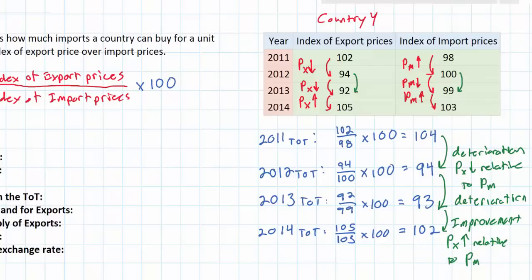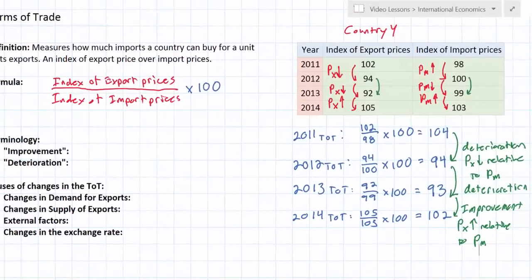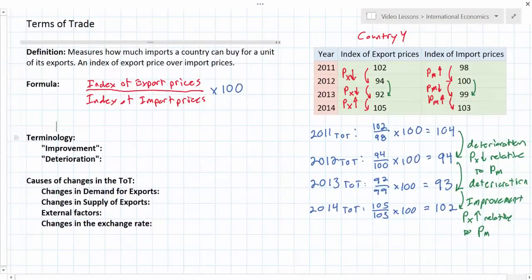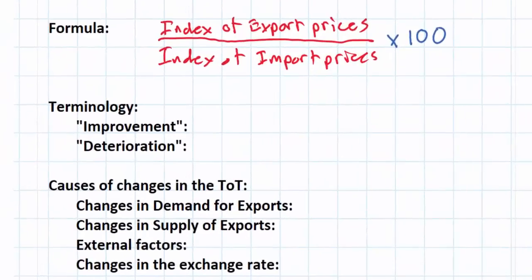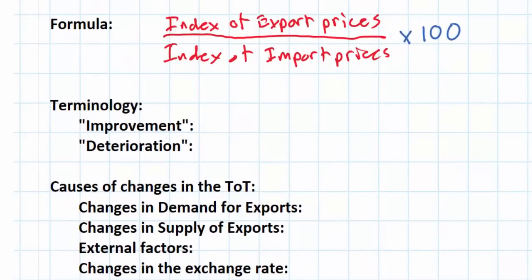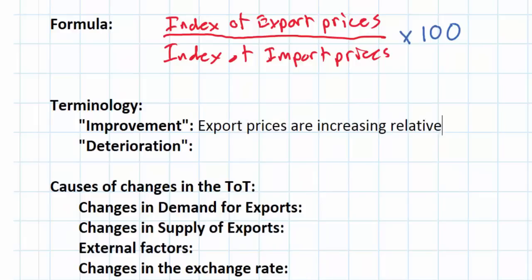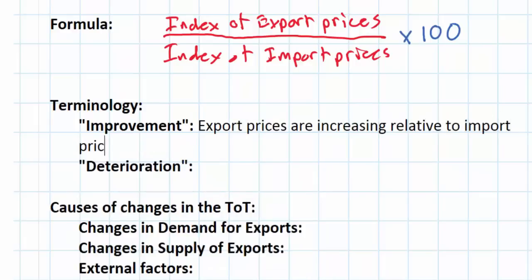So we have some terms that we can now interpret. A country's terms of trade do not simply increase or decrease — rather, the terms we use are improvement in terms of trade and deterioration in terms of trade. A country's terms of trade are said to have improved when export prices are increasing relative to import prices, which is when the terms of trade value increases.